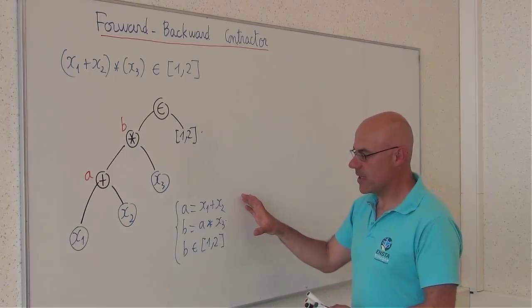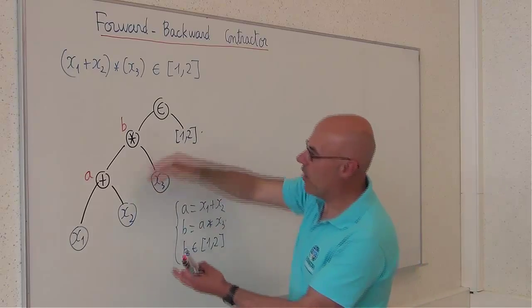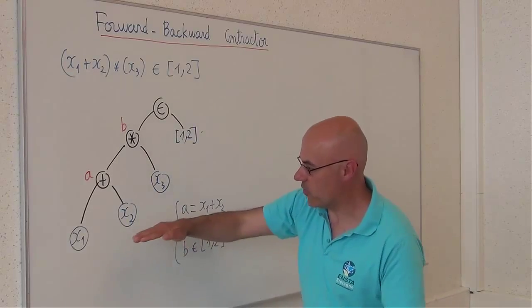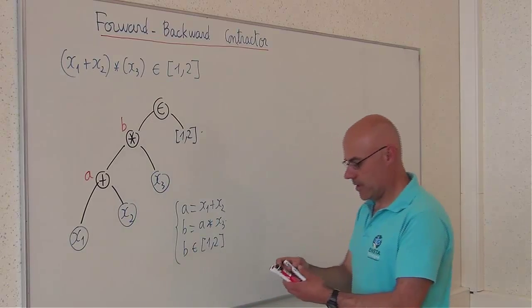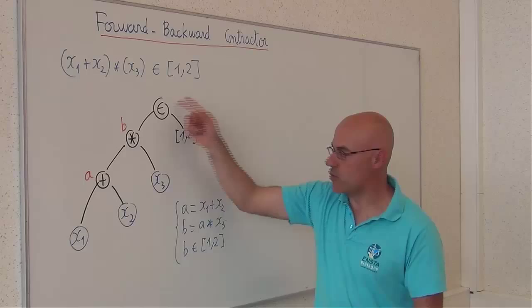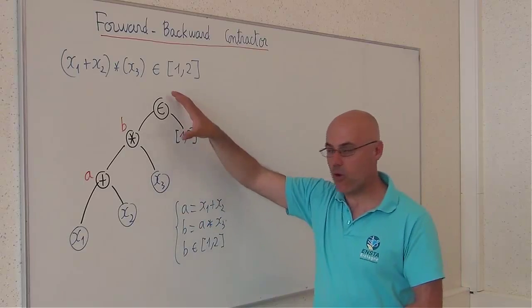Now, from this, I will show how to perform the contraction. First, from the leaf to the root, then from the root to the leaves. From the leaf to the root, it corresponds to the forward contraction.